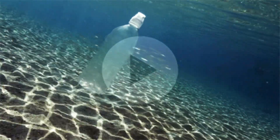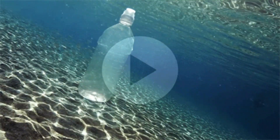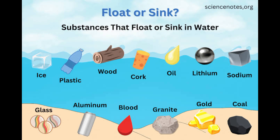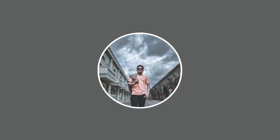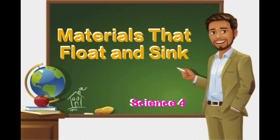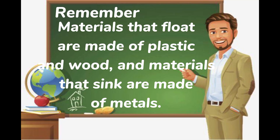So what are the materials that float? These are materials made of wood, like chairs, tables, and others. There are also materials that float that are made of plastic. The materials that sink are those made of metal. Remember: materials that float are made of plastic and wood, and materials that sink are made of metals.